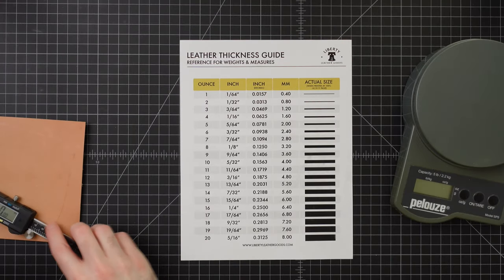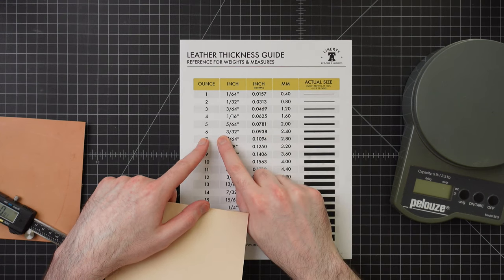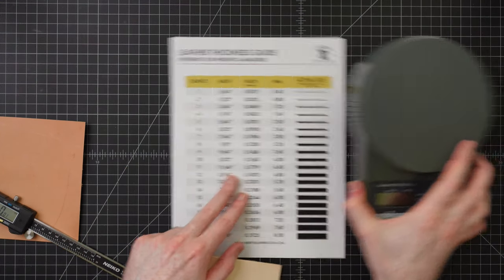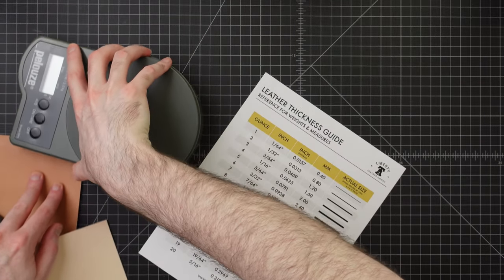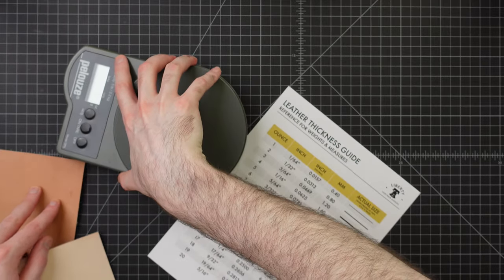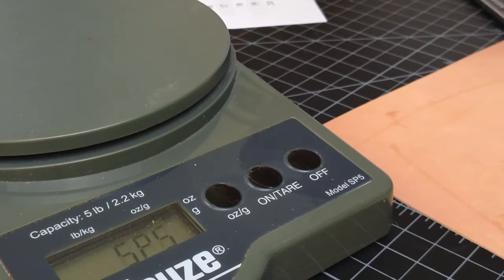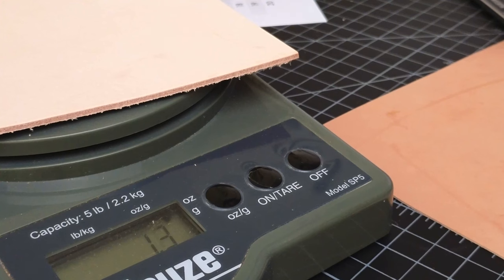So next, that would be 2.4 millimeters, approximately a six ounce weight. If we go to our scale here, I'll turn this over. And we weigh this, one quarter of it should be approximately 1.5 ounces around there. So 1.3.